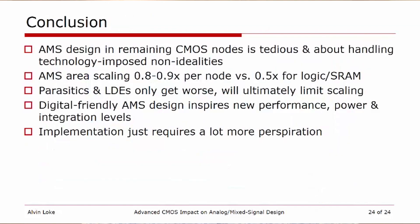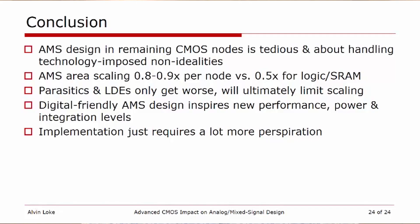To conclude: analog mixed-signal design in advanced CMOS nodes is very tedious — largely about understanding the technology, identifying how it imposes non-idealities, and dealing with them. Analog mixed-signal scaling is not scaling as nicely as the roughly 0.5x achieved for logic and SRAM, typically scaling no better than 10 to 20% per node. This is largely due to parasitics and layout-dependent effects, which will get worse. However, by making analog mixed-signal designs more digital-friendly, you can achieve new performance-power-integration levels — the only difference is that you have to work a lot harder to get there. Thank you.